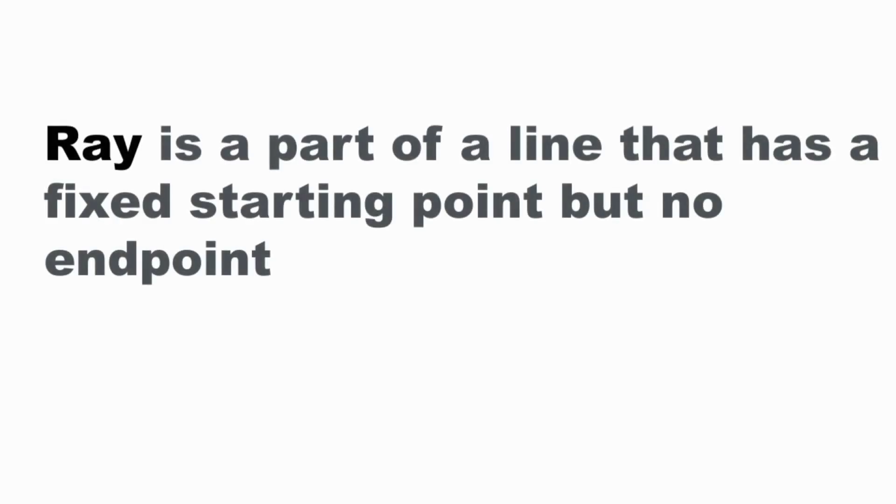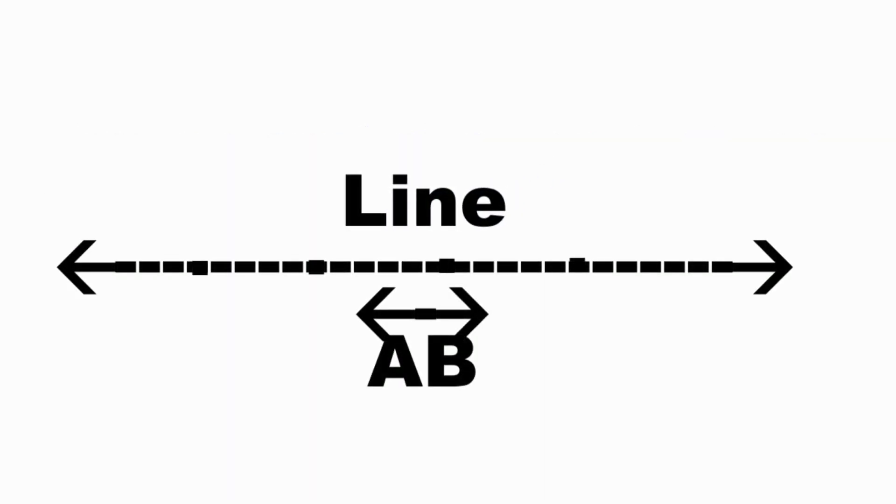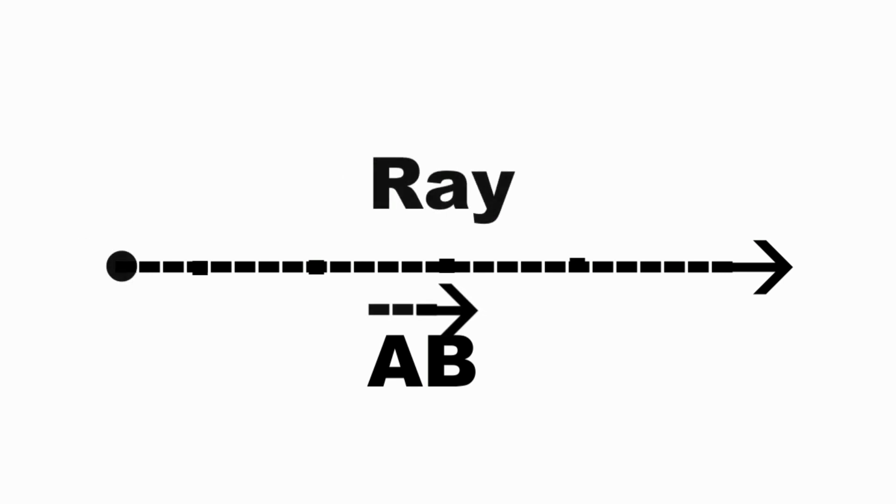A ray is a part of a line that has a fixed starting point but no end point. This is a line, no starting point and no end points. From this line, we can have a ray with one starting point but no end point.